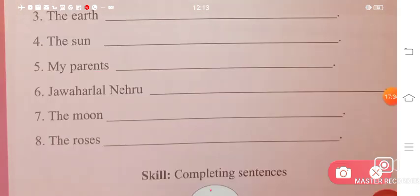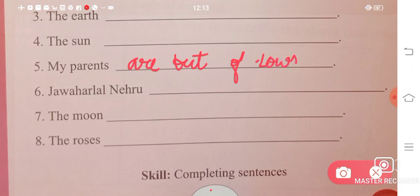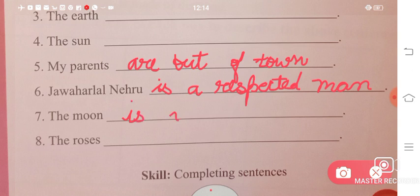'My parents are out of town.' They have gone outside from where I live. 'Jawaharlal Nehru is a respected man.' He is greatly respected. Next is 'The moon is very far.' The moon is very far away. 'The roses are red.' Roses are red in color.